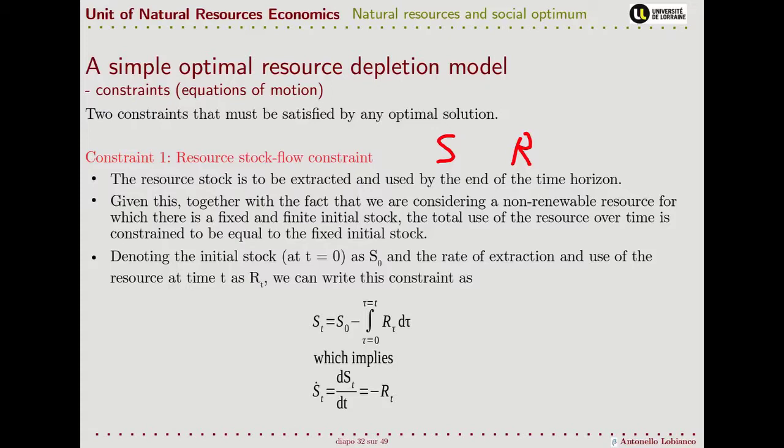So it is evident that if we left out some natural resources, this cannot be an optimal solution. All natural resources must be used by the time we end our reference time for the solution to be optimal. And because we are considering non-renewable resources that are available in fixed and finite initial quantities, the total use of this resource over time must be equal to the fixed initial stock.